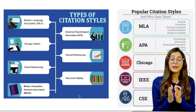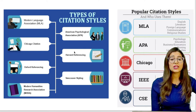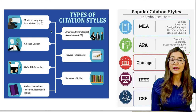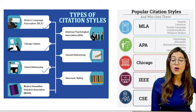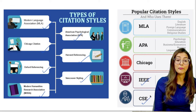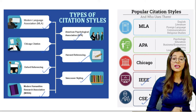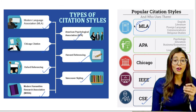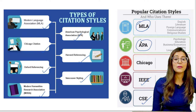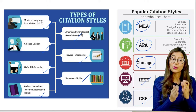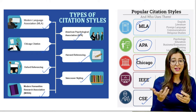Now we will see how many types of citation styles there are. Citation styles are many: MLA, Chicago, Oxford Referencing, MHRA, APA, Harvard, Vancouver, IEEE, CSE. But which is important for us? First of all, MLA is important for us. So now we will start with MLA, which is our literature and humanities citation style.